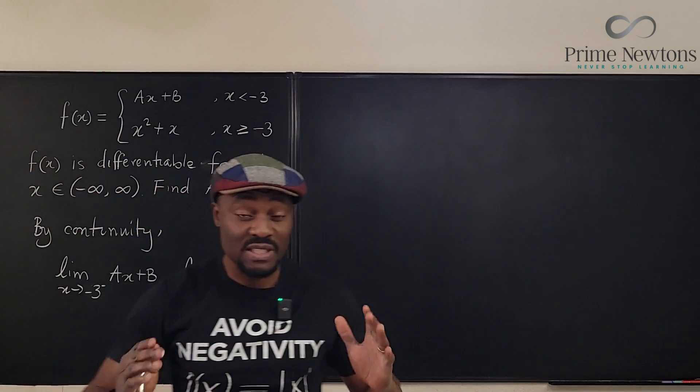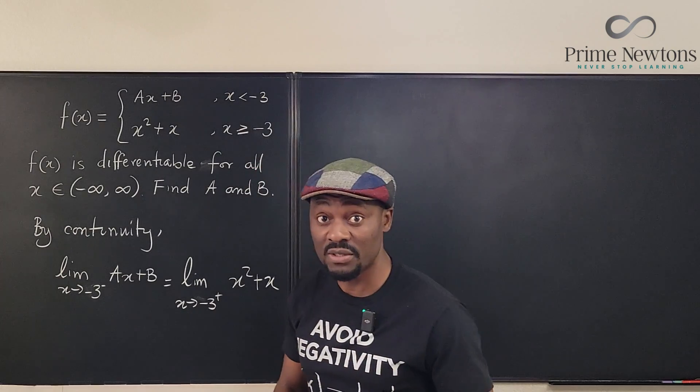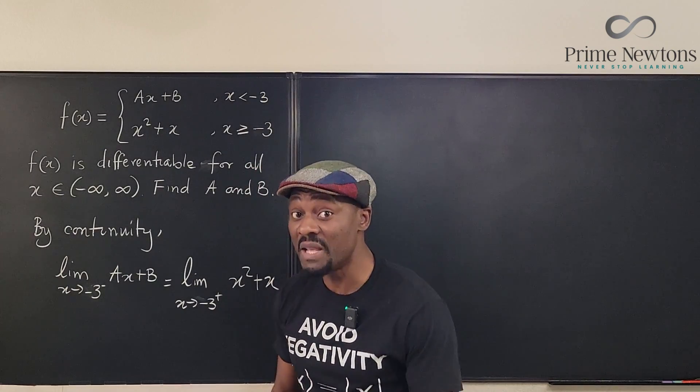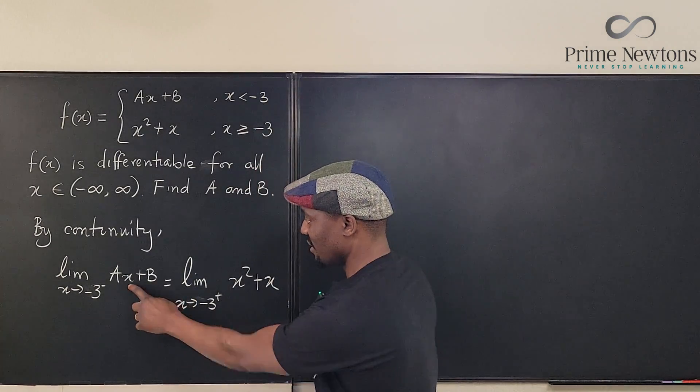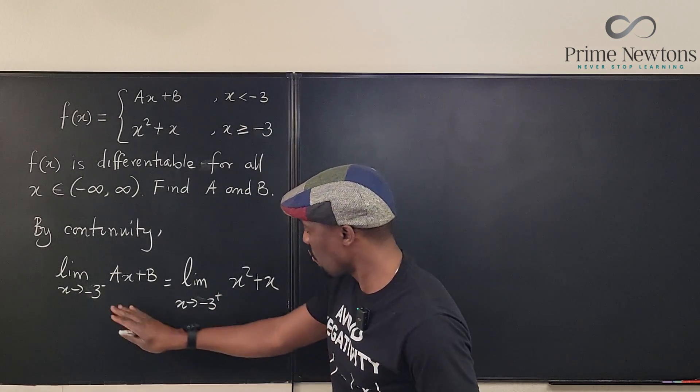And the function we're going to be using is x squared plus x. This is the first condition for you to say a function is continuous. The limit must exist. And this is the way to show the limit exists.